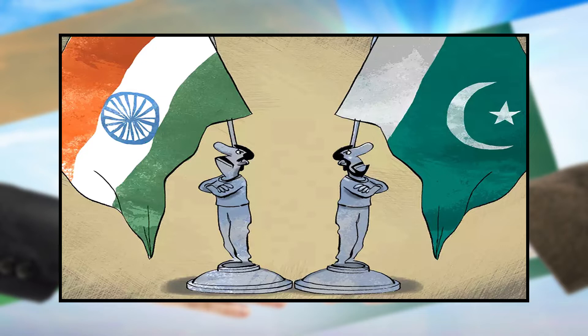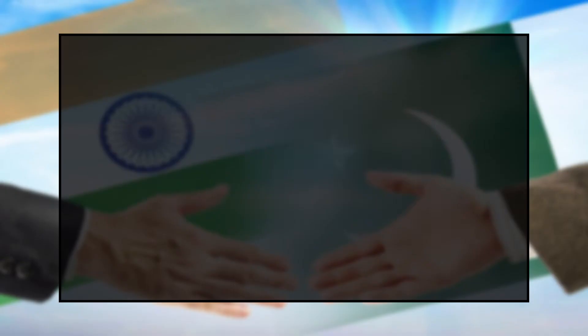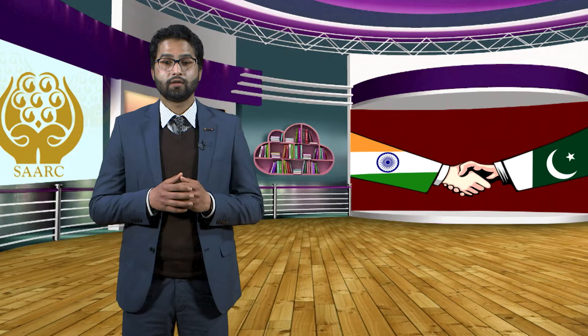During the last 75 years as post-colonial nation-states, India and Pakistan have had a checkered and sometimes violent career. Deep distrust, acrimony, and recurrent military hostilities have characterized the relationship. India and Pakistan have fought three wars on Kashmir — 1948, 1965, and 1999 — and engaged in endless skirmishes across the Line of Control that divides the erstwhile princely state of Jammu and Kashmir, which remains the core bilateral issue between the two states.